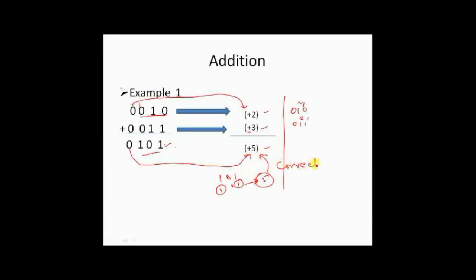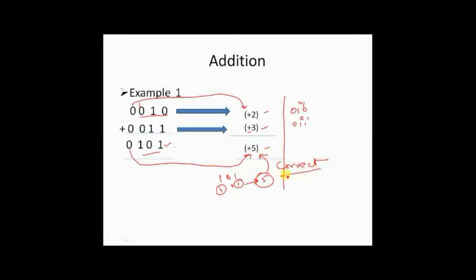So we will go for the second example. In the second example, we have 0100 plus 1010. So 0 indicates a positive number and 100 will be 1, 2, 4. This is plus 4. And we have got 1010. So 1 means a negative sign. And what is the meaning of 010?